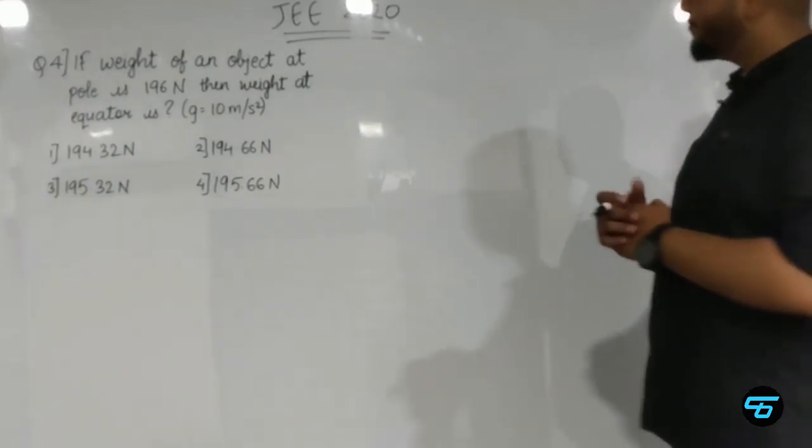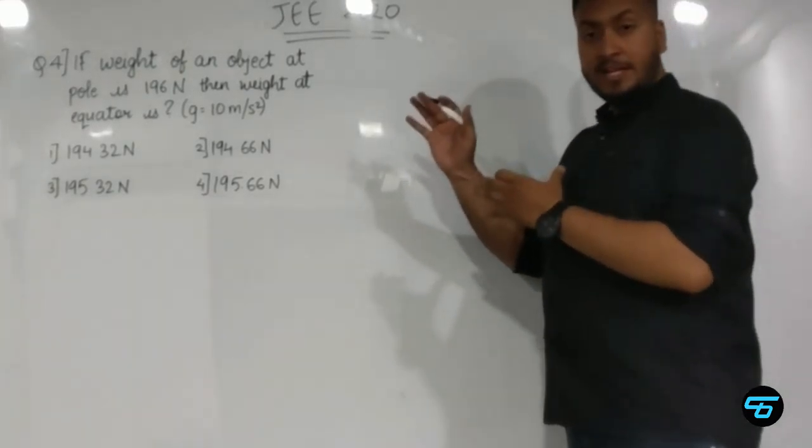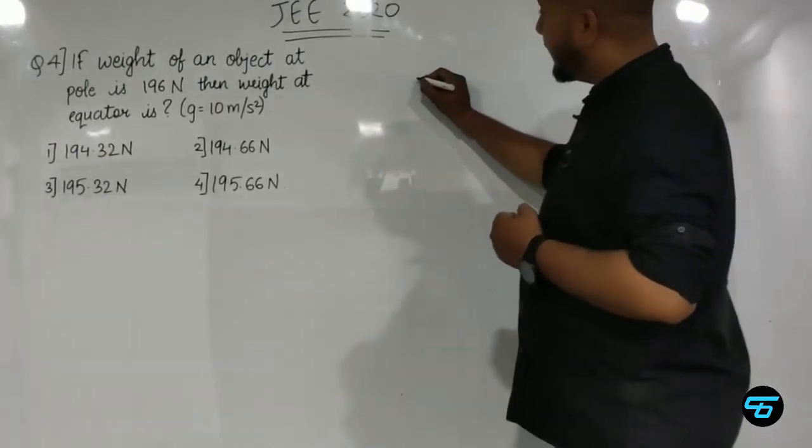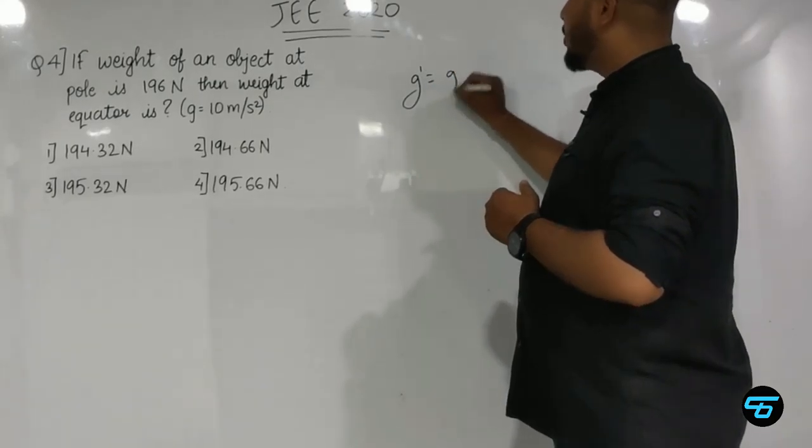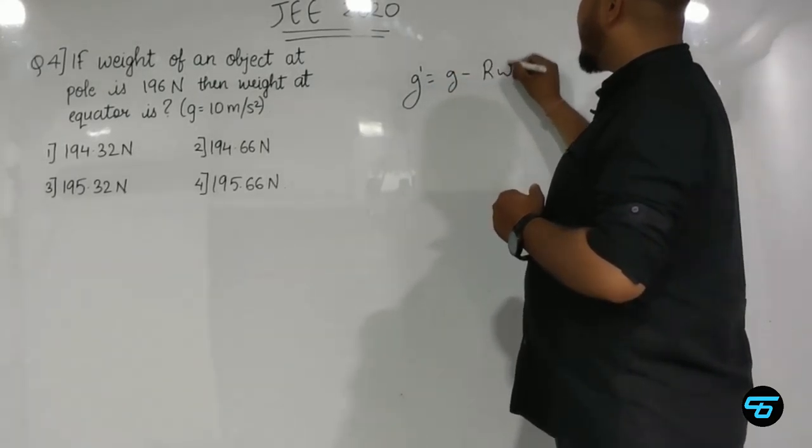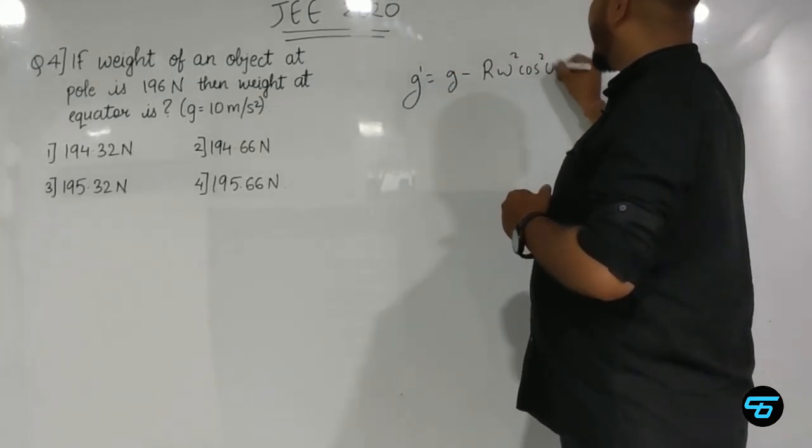The answers are very close, so let's see how to solve this problem. For this type of problem, the formula is: g dash equals g minus r omega square cos square phi.